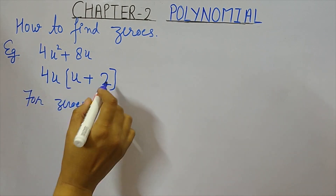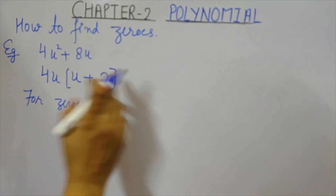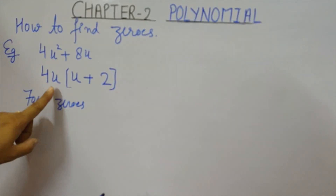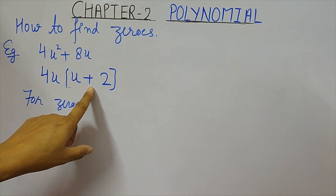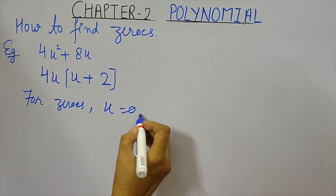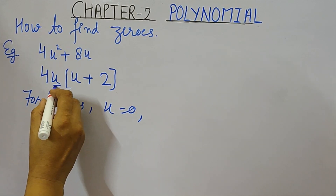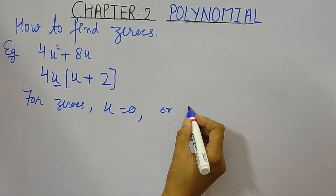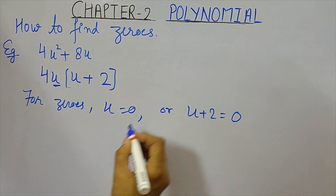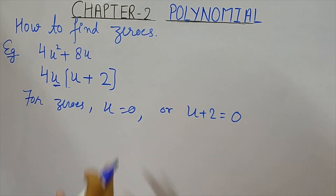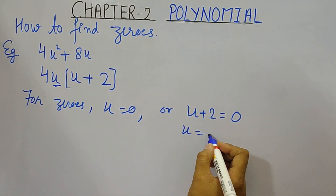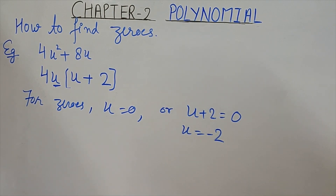To find zeros, either u = 0 or u + 2 = 0. From u = 0 we get the zero directly, and from u + 2 = 0 we get u = -2. So the zeros of 4u² + 8u are 0 and -2.